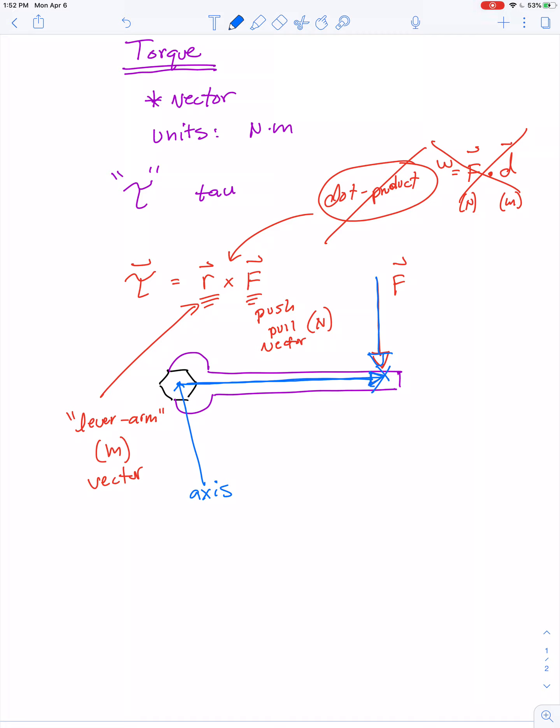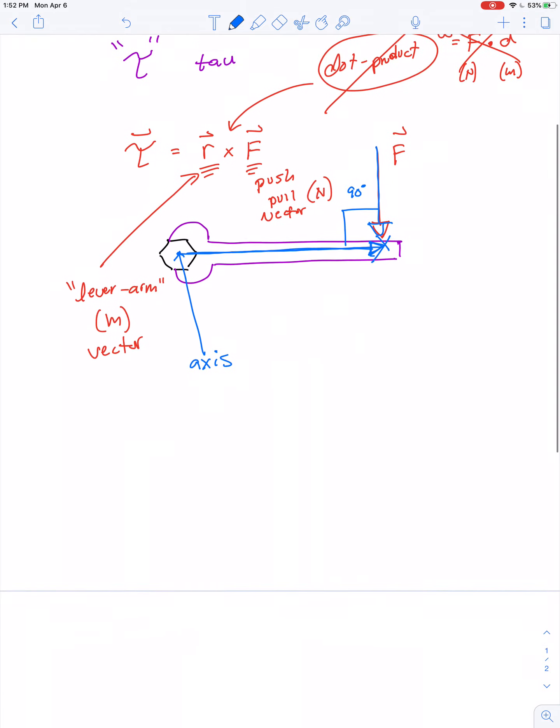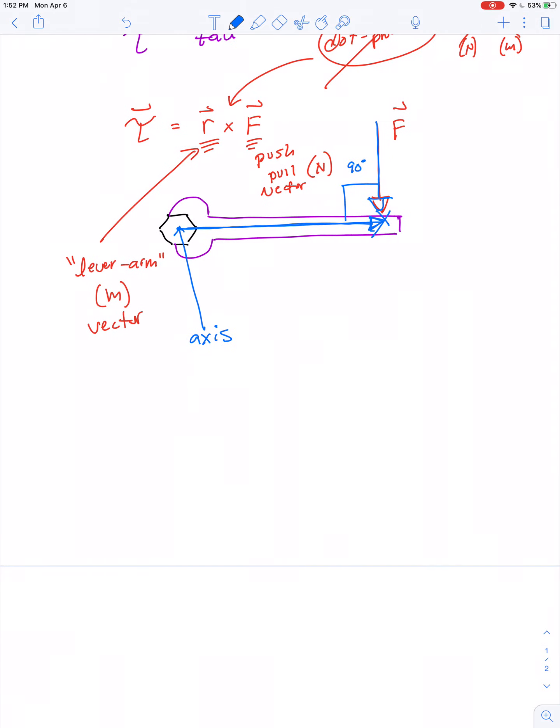We're taking the cross product. In this case, the angle between them happens to be 90 degrees. The cross product is maximized if the angle between the force and the lever arm equals 90. The torque is zero if the angle is either zero or 180 degrees.